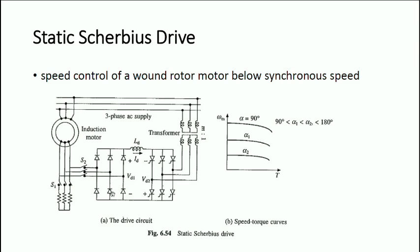Before going further, let me compare with rotor resistance control. In rotor resistance control, the whole power is lost in the resistance. But here, the power on the rotor side is fed back to the input supply, so the total power drawn is reduced. That means the overall efficiency of the drive is increased.